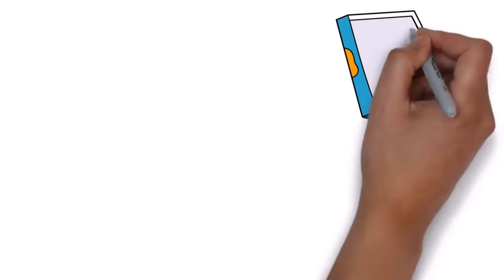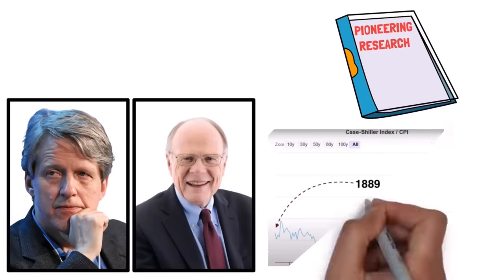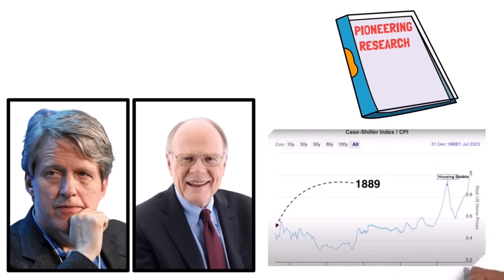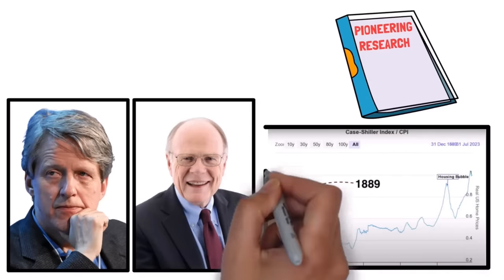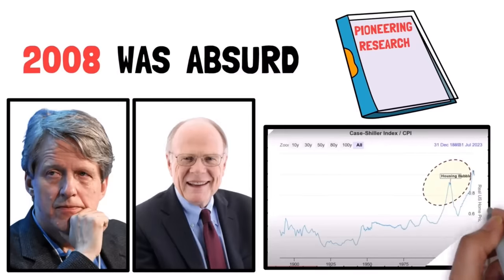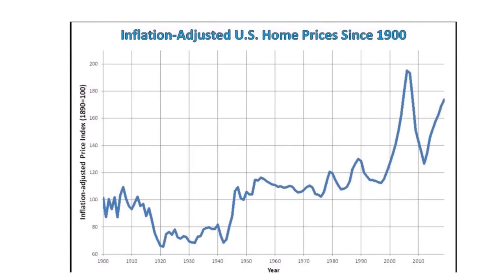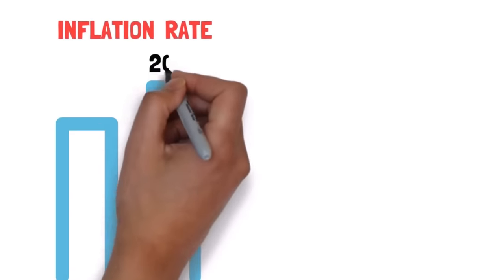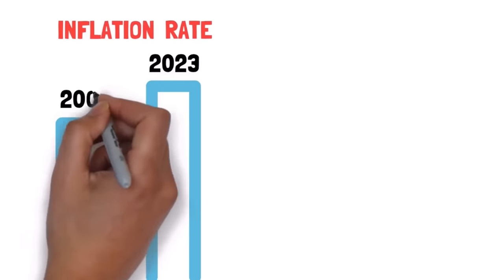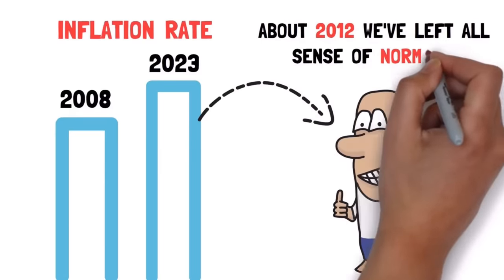In fact, based on the pioneering research of Robert J. Shiller and Karl E. Case, we have relatively good data on housing prices going back to 1889. And as you can see, 2008 was absurd. The price of a home reached a level that was previously believed to be impossible. And while there has been a trend of growing real prices in the last 100 years, it's still clear that today's bubble is now worse than what we saw in 2008. This span was considered normal, but since about 2012, we've left all sense of normality.